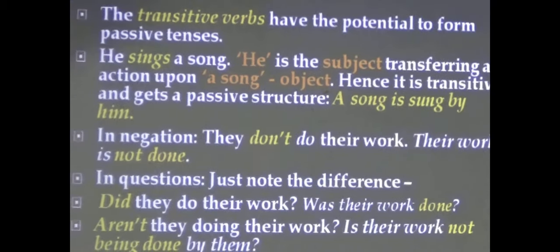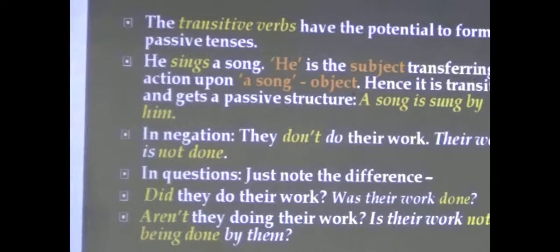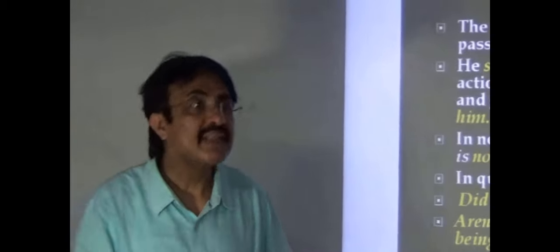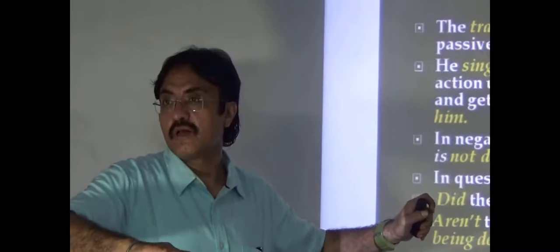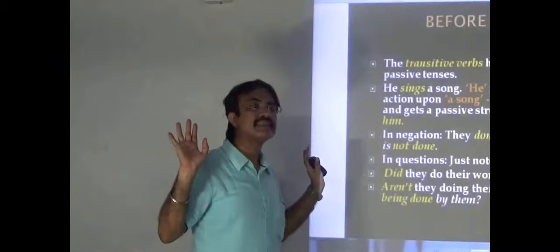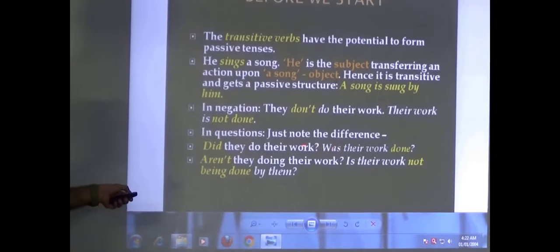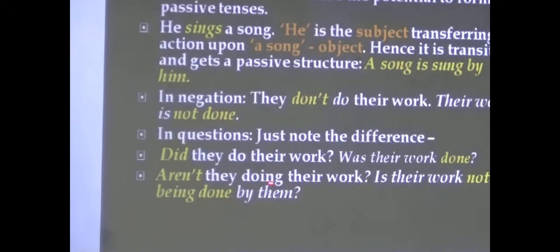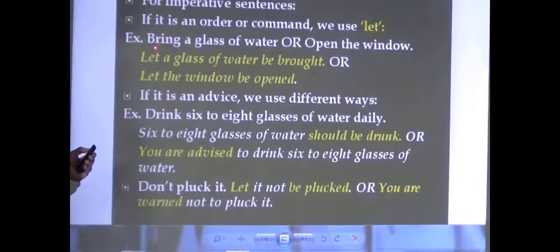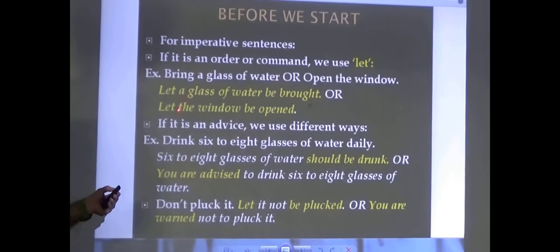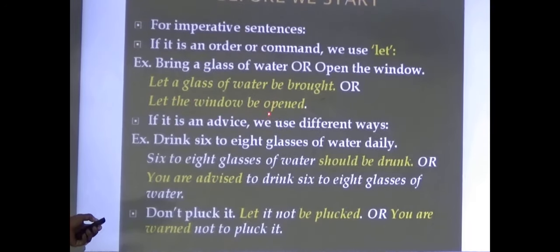My maid servant cleaned the floor → 'the floor was cleaned.' For questions: 'Did they do their work?' → 'Was the work done?' 'Aren't they doing their work?' → 'Is the work not being done by them?' For imperative sentences like 'bring a glass of water' or 'open the window,' the passive starts with 'let': 'Let a glass of water be brought' or 'let the window be opened.'